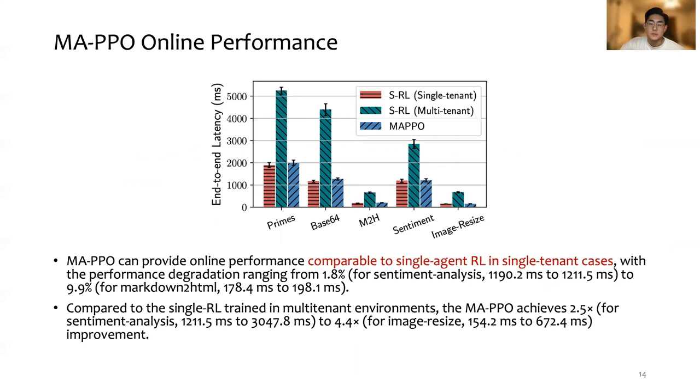The figure shows the performance comparison between MA-PPO control functions and the single RL training multi-tenant environment. As shown in the figure, MA-PPO was able to provide online performance comparable to single agent RL in single tenant cases.